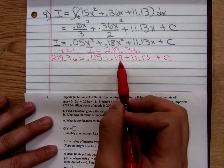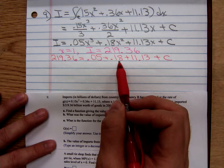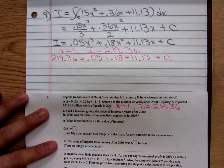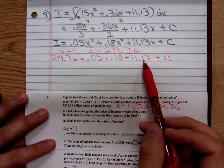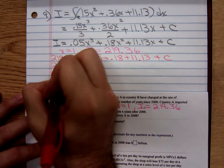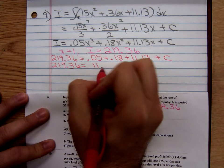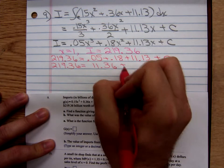And 0.05 plus 0.18 is 0.23, plus 11.13. This isn't working out bad at all. That's going to be 11.36 plus C.